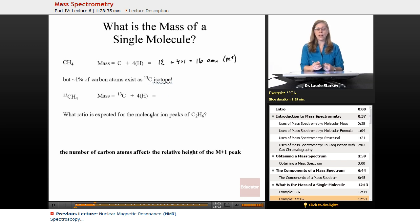So carbon 12 has six protons. That's what makes it carbon and six neutrons. So we add those together and that's how we get 12.